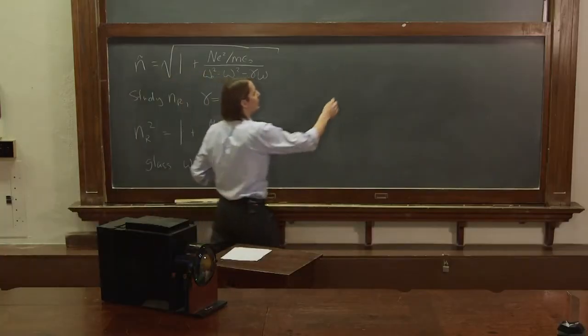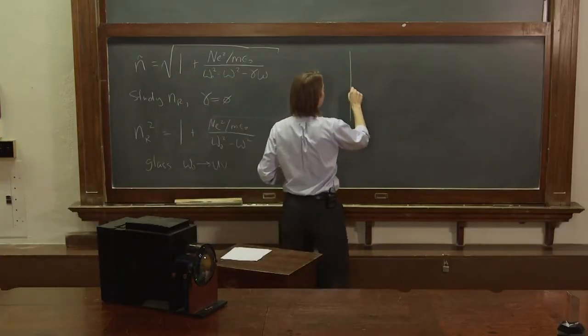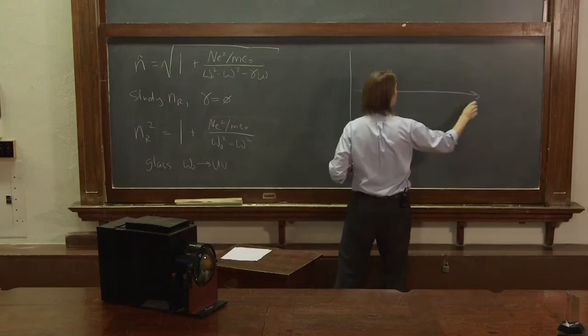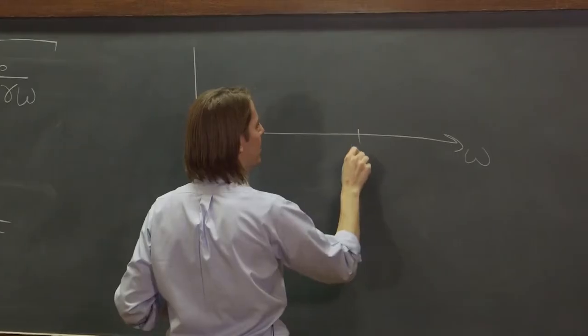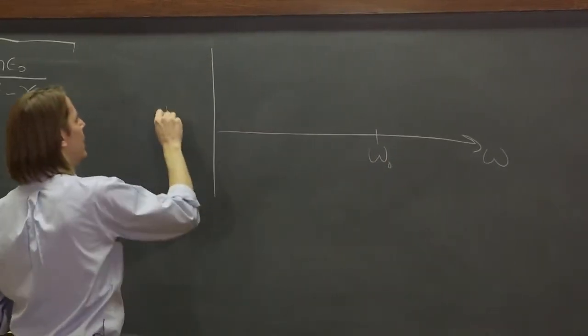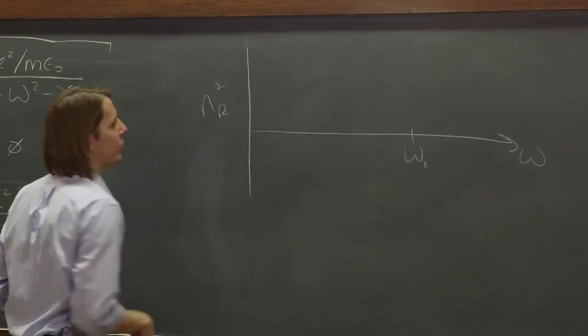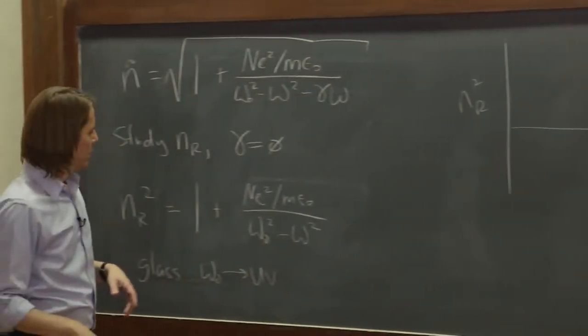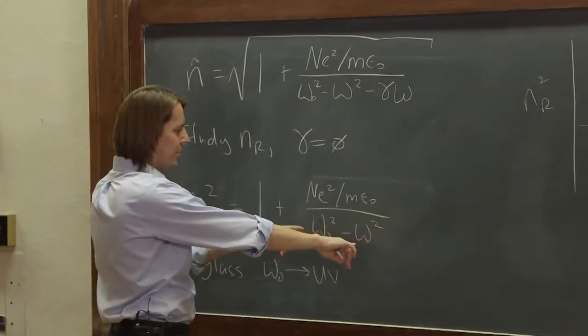So now if we were to plot this function, it would look something like this. Here is omega, we'll say omega naught is here, and here's nR. Actually we're plotting nR squared, and it's fine.